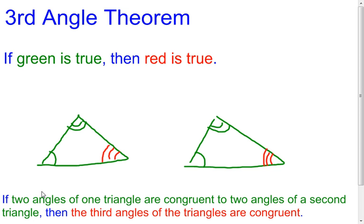And that's the third angle theorem. When you look at the words: if two angles of one triangle are congruent to two angles of a second triangle — those two angles matching up and being congruent with the other two angles — then the third angles of the triangles are congruent. This being the third angle of the one triangle, this being the third angle of the second triangle — we know that they have to be congruent.